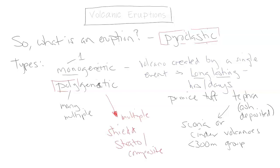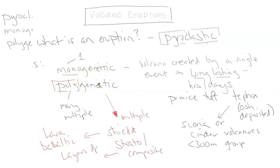It's important to know because the shield is going to grow bigger through multiple consistent basaltic lava flows. The strato and composite are named because of the alternating layers of lava and ash. They grow taller with a very steep, narrow edifice because of consistently erupting volcanoes over time, layering on ash and lava.